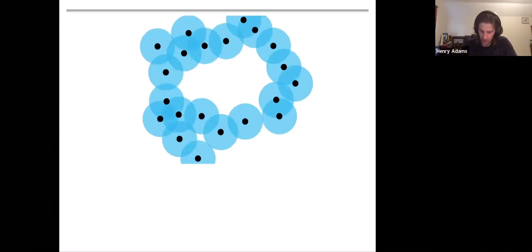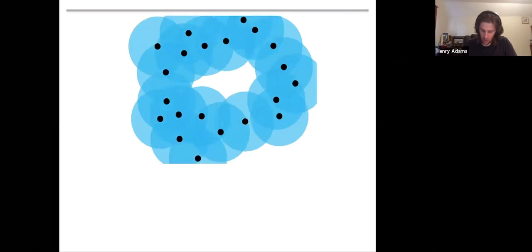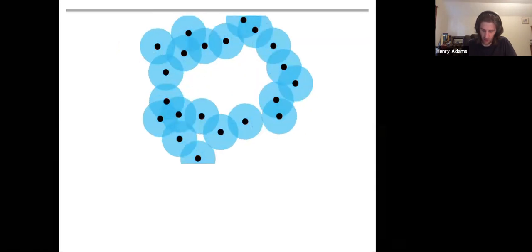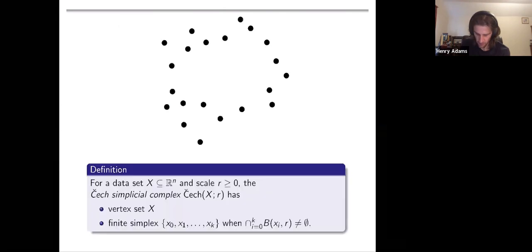By contrast, this feature right here maintains even as I blur my vision to a considerable extent. All the way up to here, I've still maintained this large loop. So that might be a feature that I say is more prominent in the dataset. Maybe that's more likely to be a true hole in the dataset instead of a sampling artifact. That will be our perspective. These persistent features that maintain over a range of blurring.